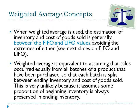When weighted average is used, the estimation of inventory and cost of goods sold is generally in between the values one would get for FIFO and LIFO, avoiding the extremes of either. Weighted average is equivalent to assuming that sales occur equally across all batches of a product that have been purchased, so that each batch is split between ending inventory and cost of goods sold. This is very unlikely because it assumes some proportion of beginning inventory is always preserved in ending inventory.